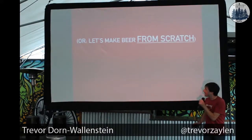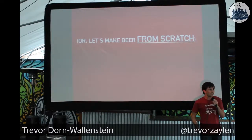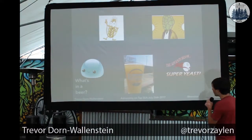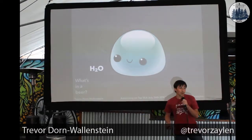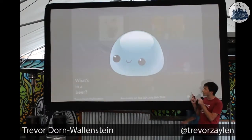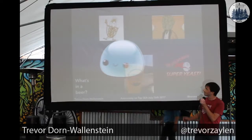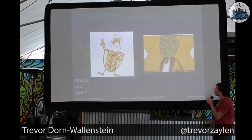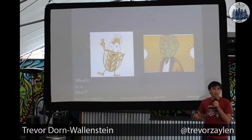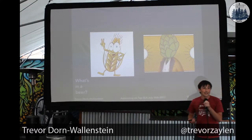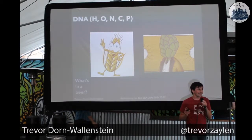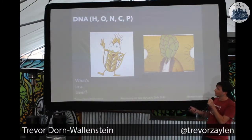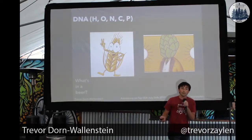I said let's make a beer from scratch — we have to go a little bit further back. So, what's in water? Water is actually pretty simple: it's just H₂O, two hydrogens and one oxygen. What about the wheat or the hops? Well, they're plants, so they're all made up with DNA — a complicated molecule, but not that complicated. It's just hydrogen, oxygen, nitrogen, carbon, phosphorus.